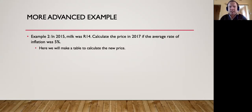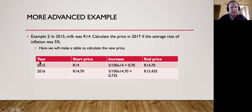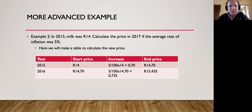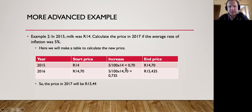We're going to use a table to work this out. In 2015, the starting price was R14. To work out the 2016 price, we calculate five percent of R14: 5 over 100 times 14 gives us R0.70. Adding R14 plus R0.70 gives us R14.70, which is the price in 2016.